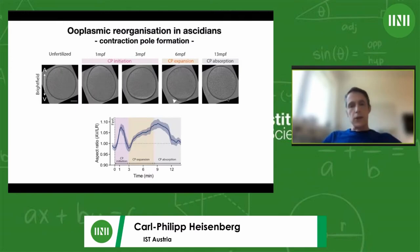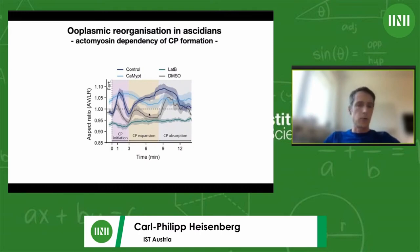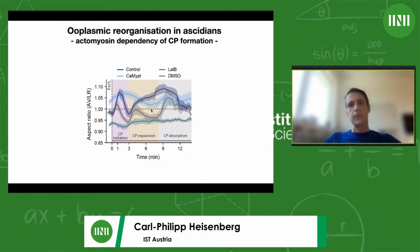This set the stage for what she wanted to understand about cytoskeletal rearrangements underlying these shape changes. She inhibited actin polymerization using latrunculin and inhibited myosin 2-dependent contraction by expressing a constitutively active form of myosin phosphatase. In both cases, the shape changes of the oocyte no longer occurred, indicating that actin and myosin activity are required. This is in accordance with the Sardet lab's findings. In contrast, inhibiting microtubules had very little effect on contraction pole formation or early myoplasm accumulation at the vegetal pole.